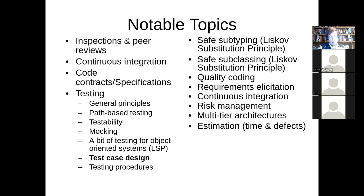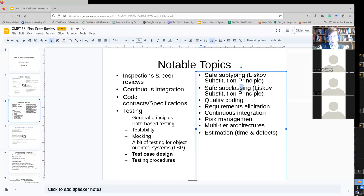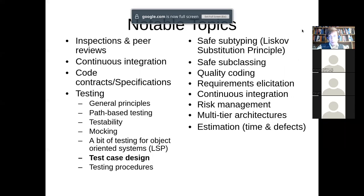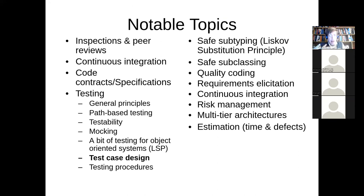Safe subtyping — we talked about Liskov substitution. We also talked about safe subclassing, which is a separate issue. Subclassing has to do with implementation — remember the add-all versus add example? If you override add, does that get you for free the updating of what add-all does, or do you have to override that as well? It depends — does it call add? That's the whole issue of safe subclassing, which has to do with implementation, whereas safe subtyping has to do with contracts and promises made.